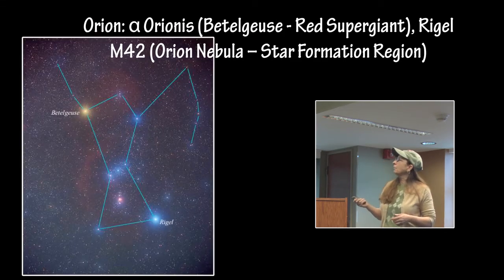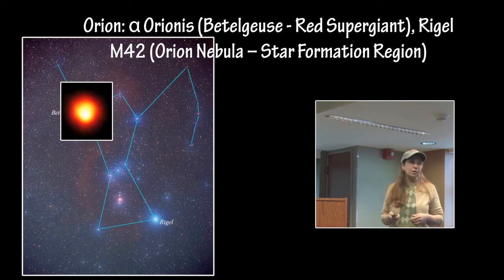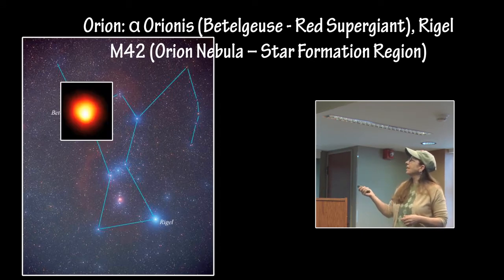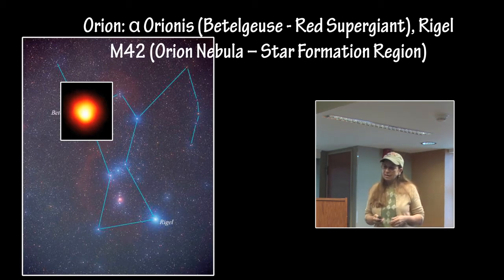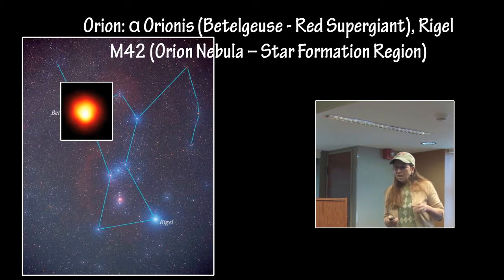We have Orion with Alpha Orionis, a red supergiant, and Rigel down here, which is a massive star.